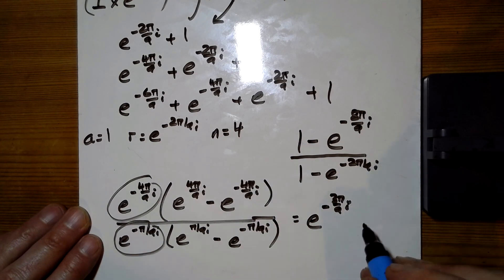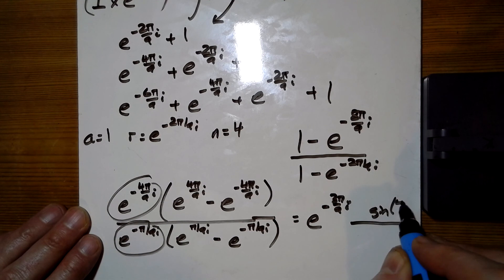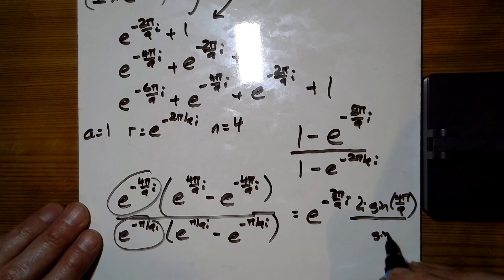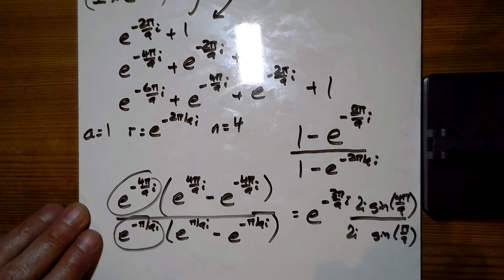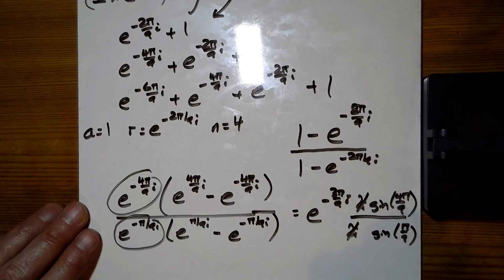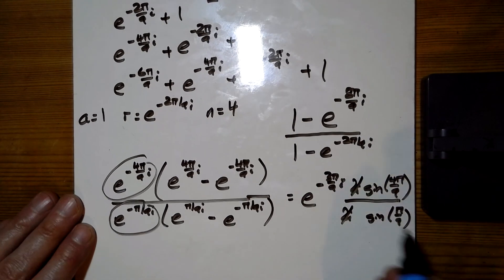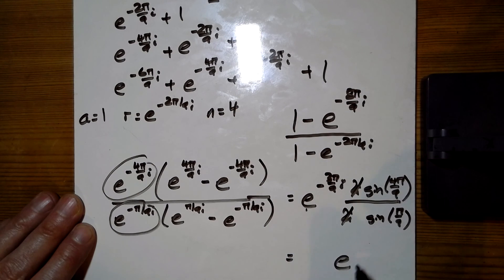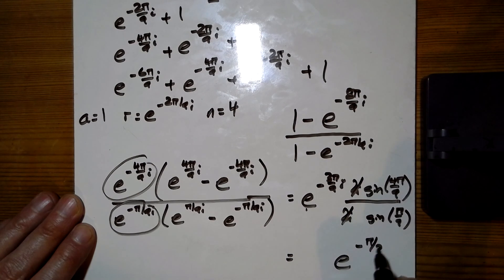Now put these two bits here. This is the sine of 4pi over 9. We've also got a times that by 2i. And this is the sine of pi over 9, also got a times that by 2i. Those things both cancel. And so what have we got? We've got e to the minus pi over 3i.